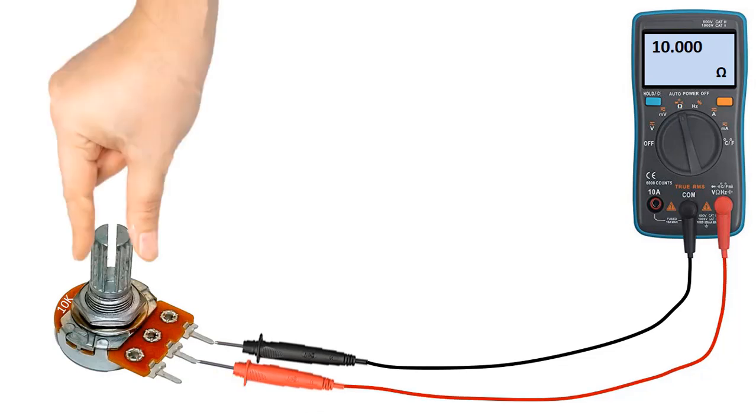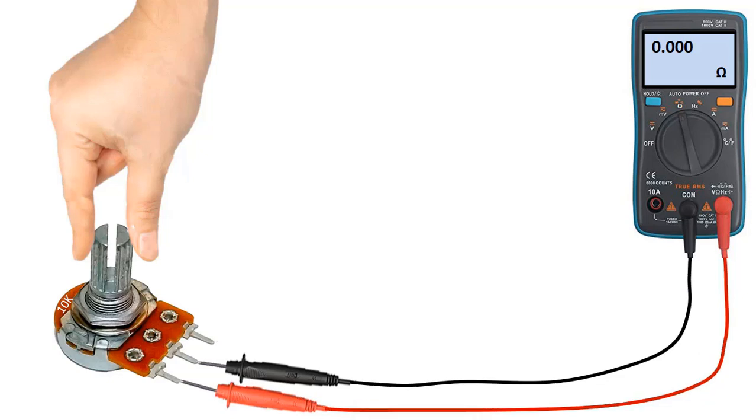Now, if we measure from the two pins on the right edge, we change the resistance value and see values between 10 kilo ohms and 0 ohm. In this way, we can adjust the potentiometer to the desired resistance value. Similarly, this time, if we measure from the two pins on the left edge, we can change the resistance value and see values between 0 ohm and 10 kilo ohms again.